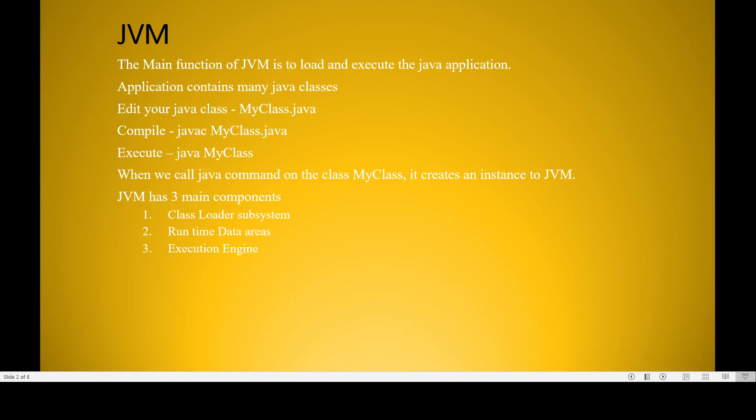Compilation is the process of converting Java source code into bytecode. Once the bytecode is generated and present in a dot class file, we execute it using the command 'java MyClass'. When we invoke that command, a JVM instance will be created to load and execute the given class.